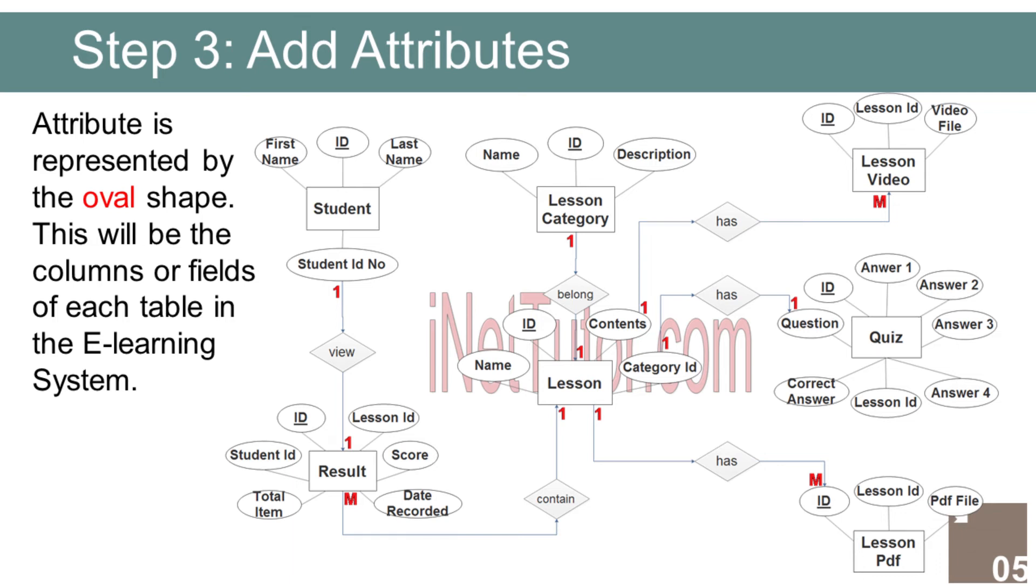Lesson Entity has the following attributes: ID (Primary Key, represented with underline), Name, Contents, Category ID. Lesson Category Entity has the following attributes: ID (Primary Key, represented with underline), Name, Description. Lesson Video Entity has the following attributes: ID (Primary Key, represented with underline), Lesson ID (Foreign Key), Video file.